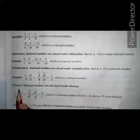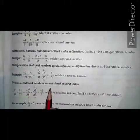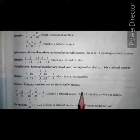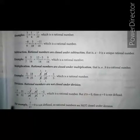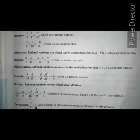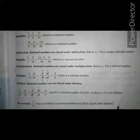Third is division. Rational numbers are not closed under division. For example, 7 upon 11 divided by 0 is not defined. So rational numbers are not closed under division.